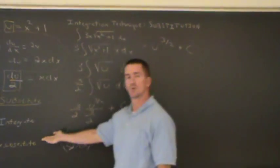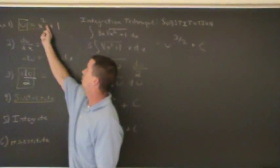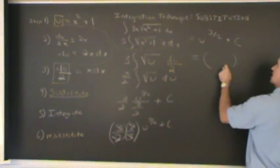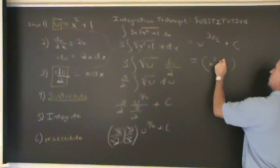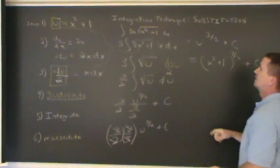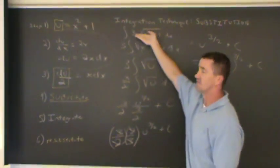In our last step, we're going to re-substitute. Go back to the beginning. What did we let u equal? Oh, x squared plus 1. So everything is in terms of x. So now we have x squared plus 1 to the three halves plus c. This is our integral. We found the anti-derivative of this expression.